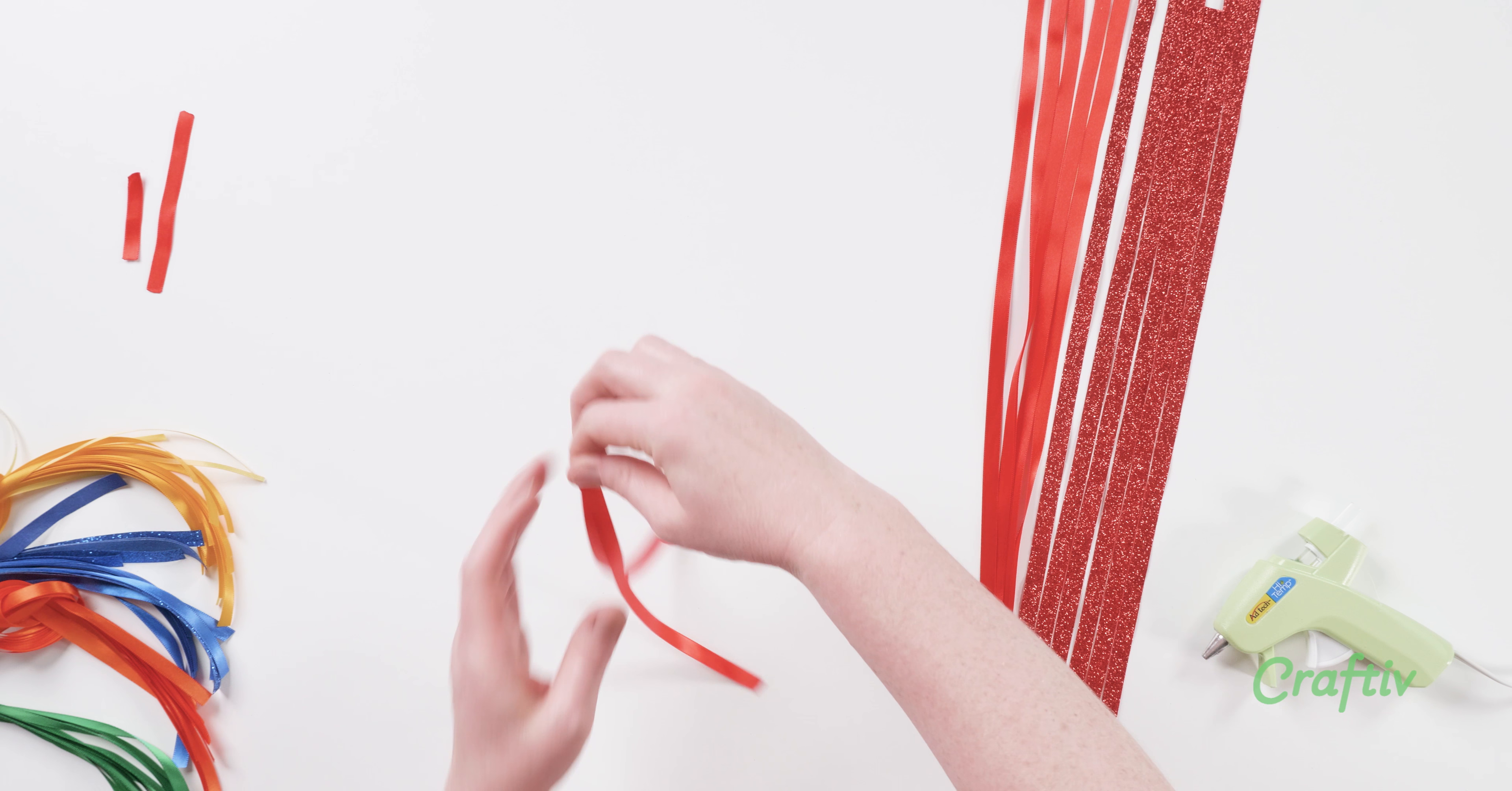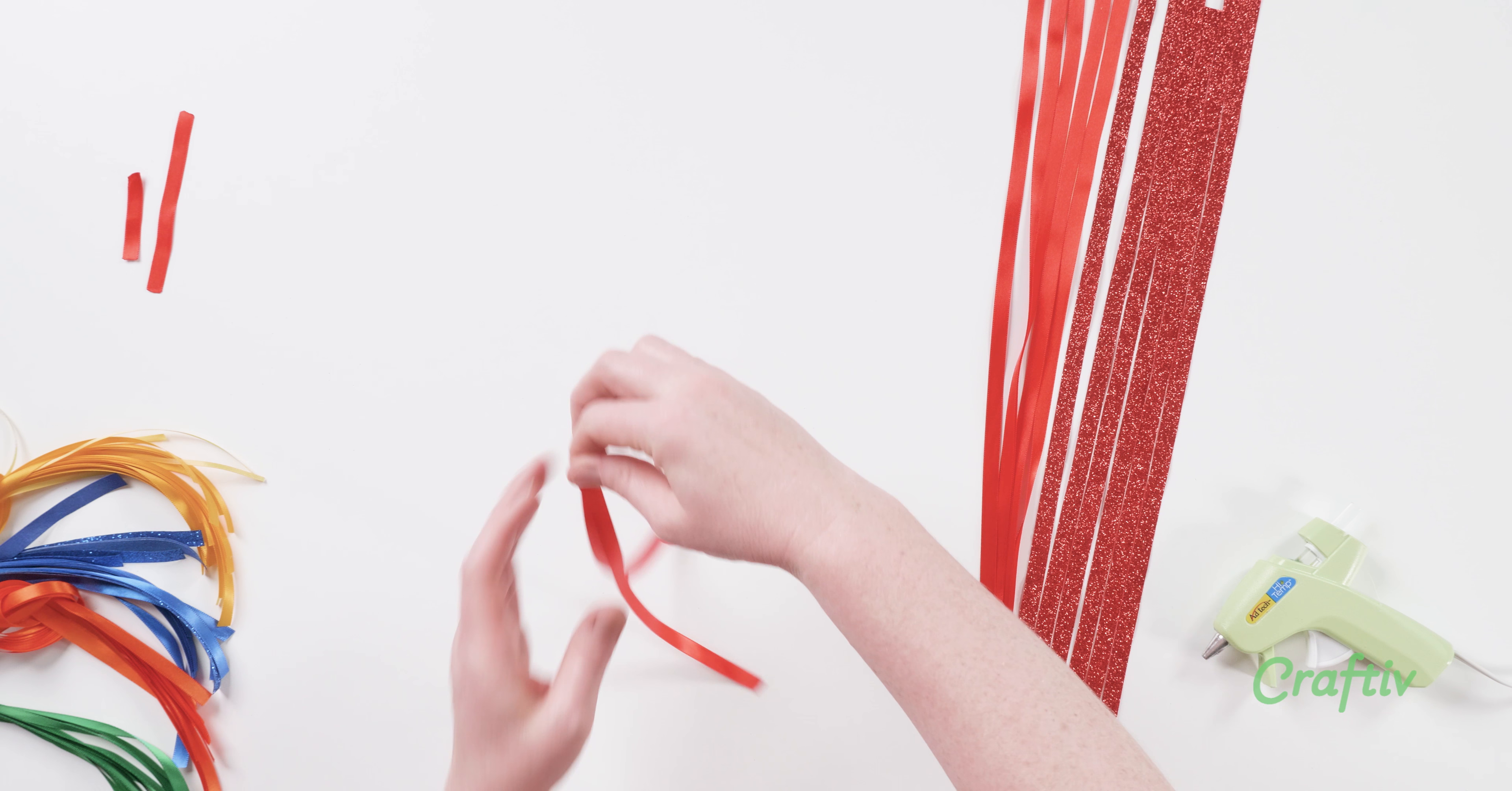With the 12 ribbons ready, we are now going to glue them in a starburst pattern. Place the first ribbon down. Oh but wait, we need to find the middle, otherwise our tassel won't be even.